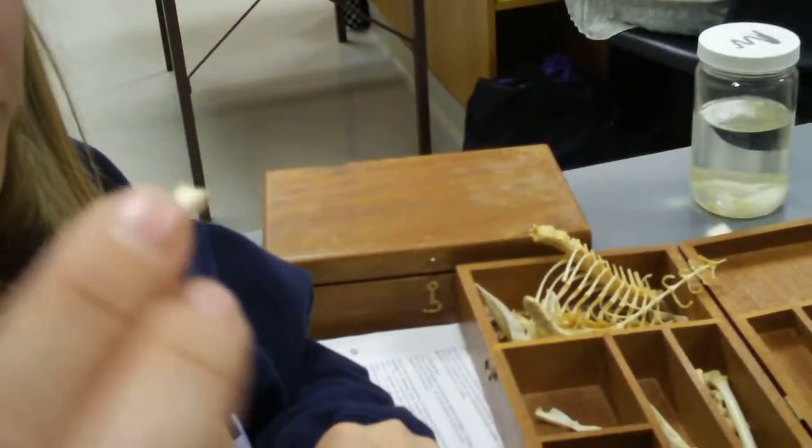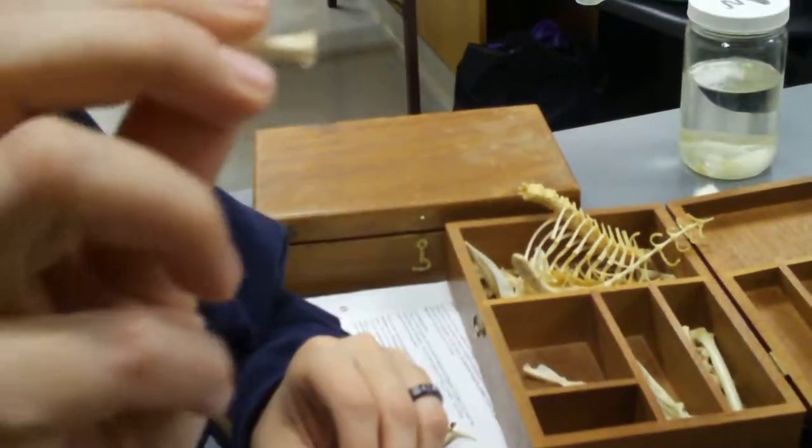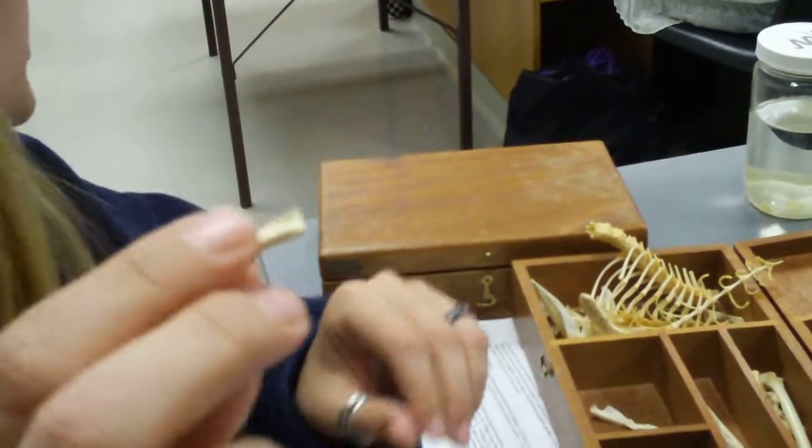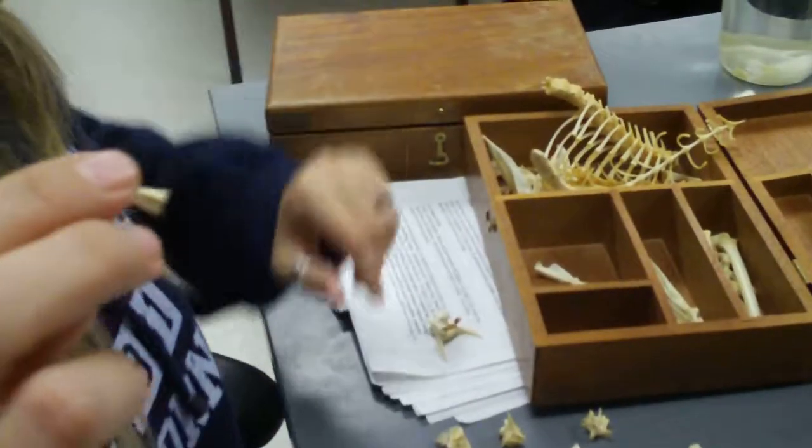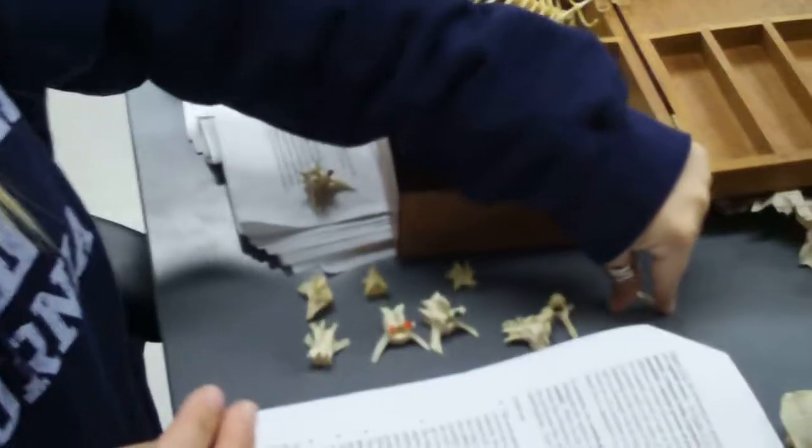This is a caudal vertebrae, so this is one of the tail vertebrae. It's really little, pretty tiny. There's a whole bunch of them. Caudal vertebrae.